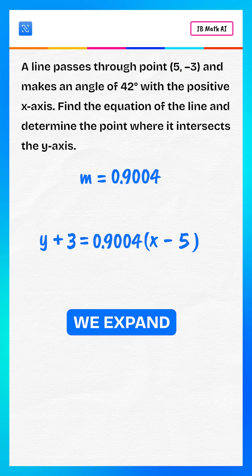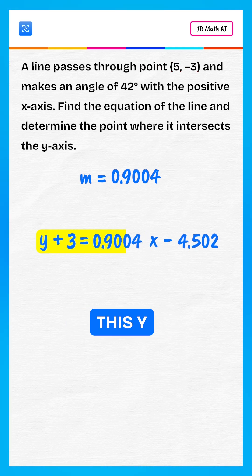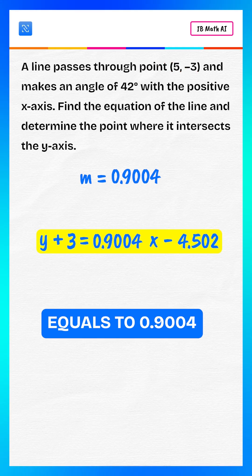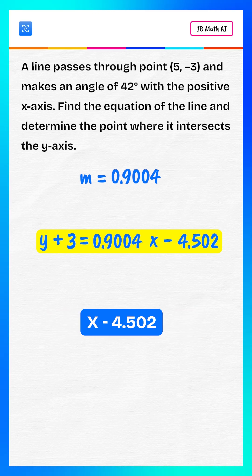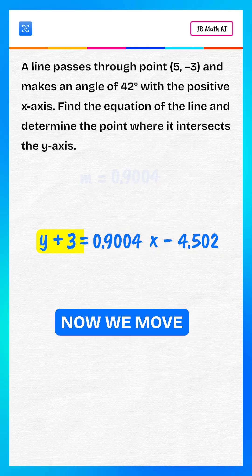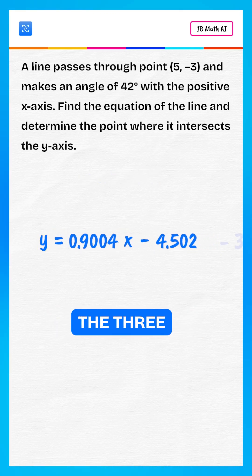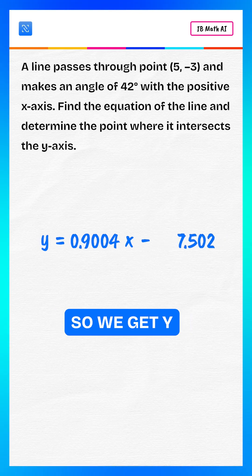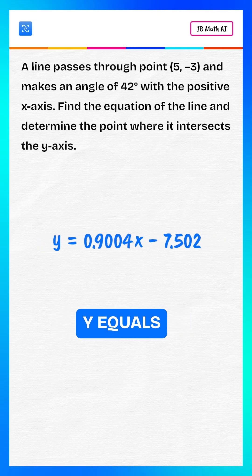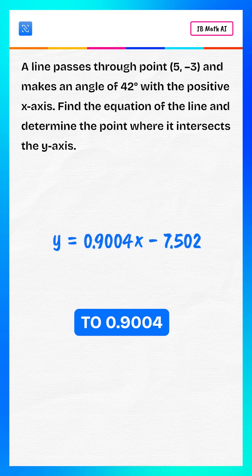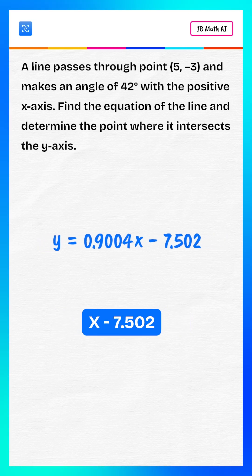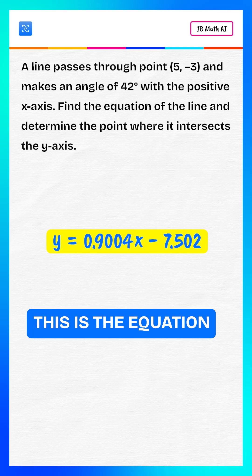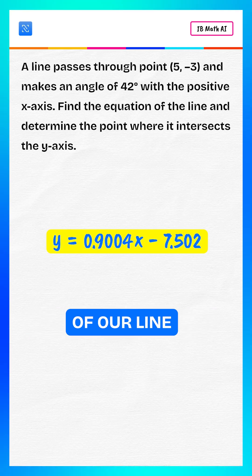Next, we expand this: y plus 3 equals 0.9004 times x minus 4.502. Now we move the 3 to the right side, so we get y equals 0.9004x minus 7.502. This is the equation of our line.